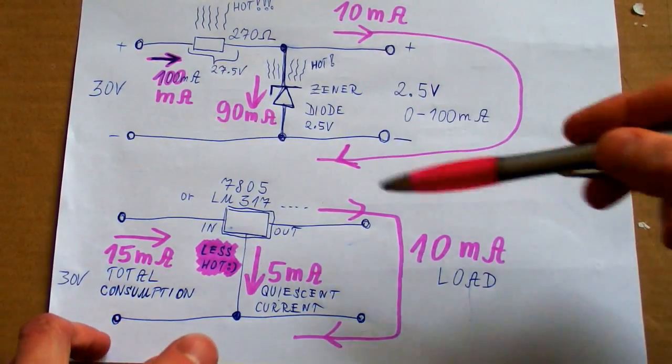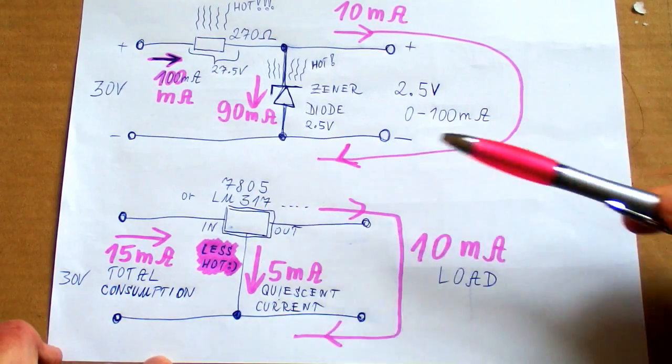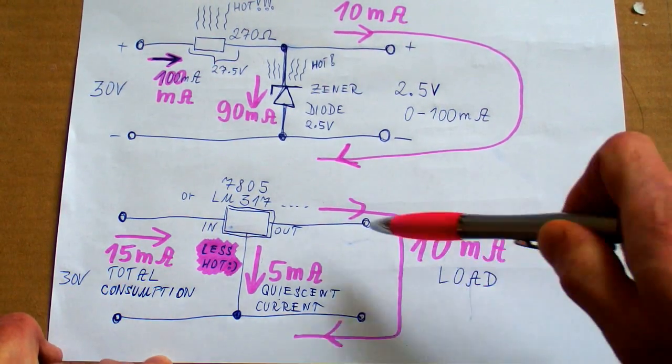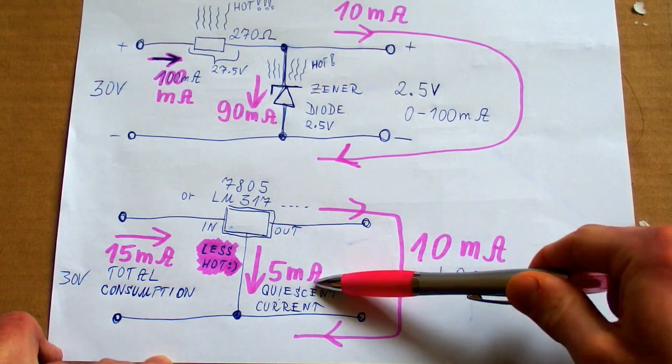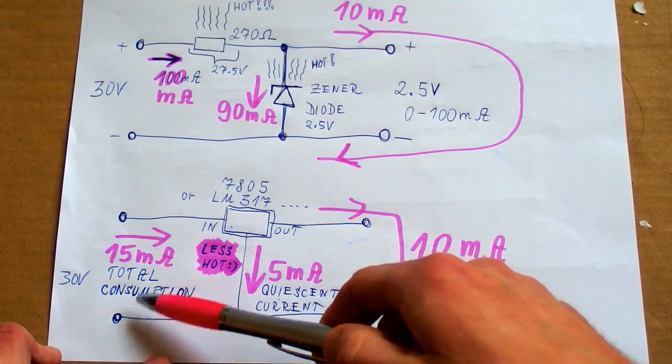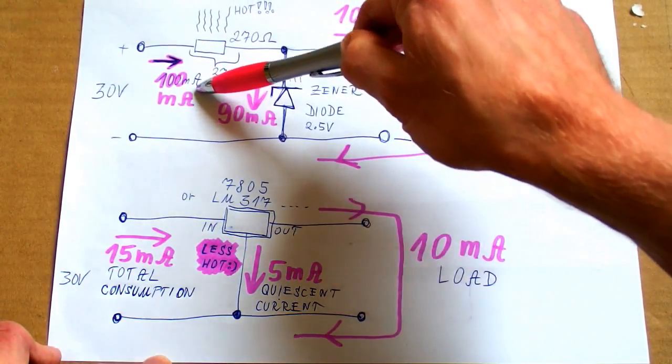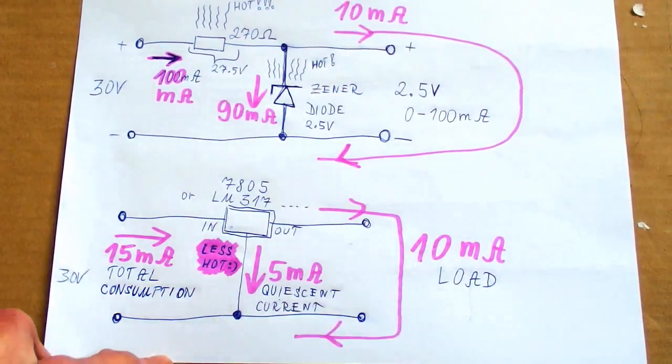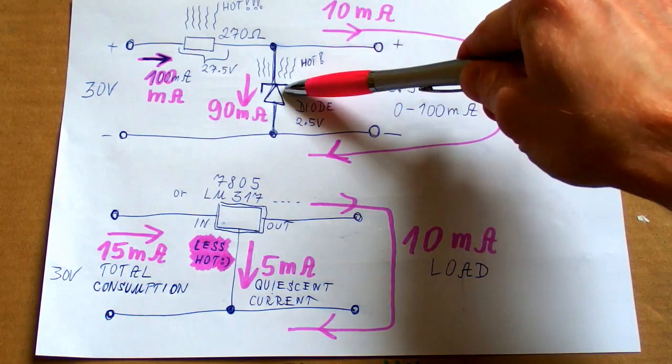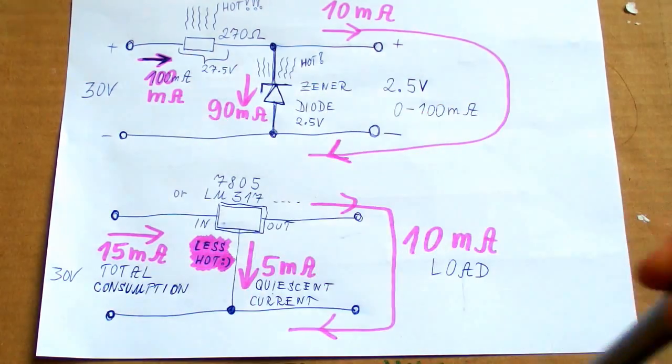It's much better to use something like 7805 or LM317. Let's say we are drawing 10 milliamps again and this circuit will have a quiescent current of about 5 milliamps. So the total current will be 15 milliamps. And 15 milliamps versus 100 milliamps, that's a really big difference. So a linear regulator is much better than a zener diode because it will draw less current and also dissipate less heat.